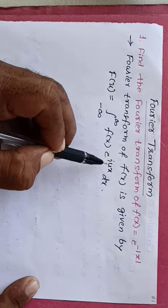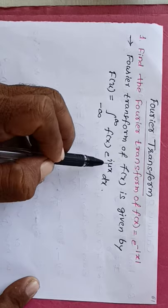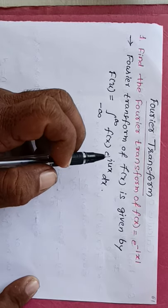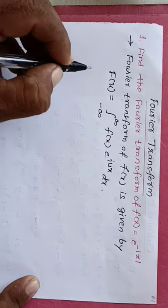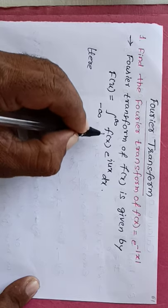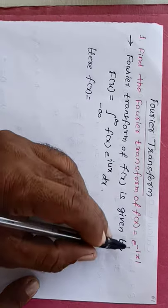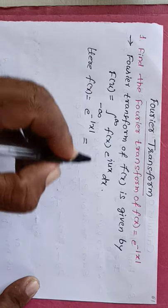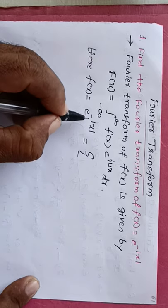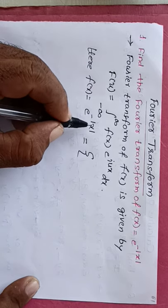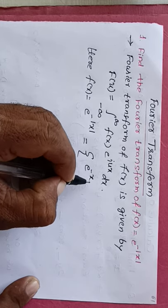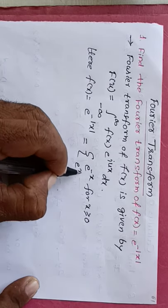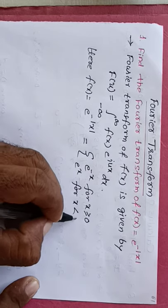The term e raised to iux present in the transform definition is called the complex Fourier transform. Here, f(x) is given as e raised to minus mod x. Since minus mod x has two values, we write it as a piecewise function: e raised to minus x for x greater than or equal to 0, and e raised to x for x less than 0.